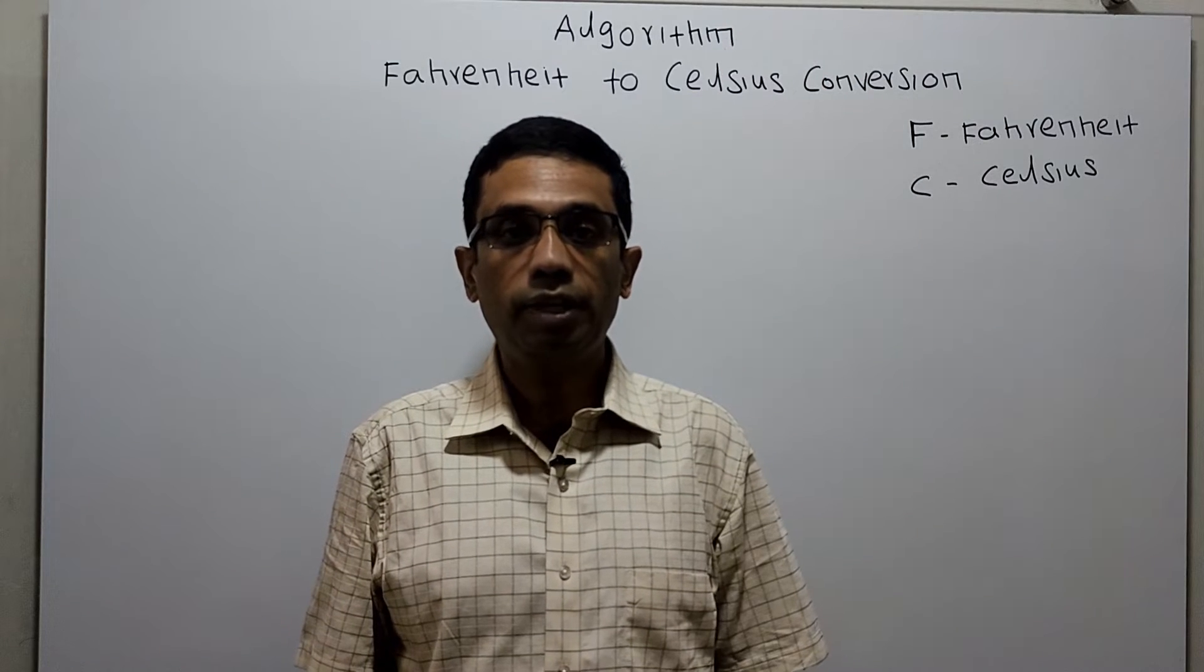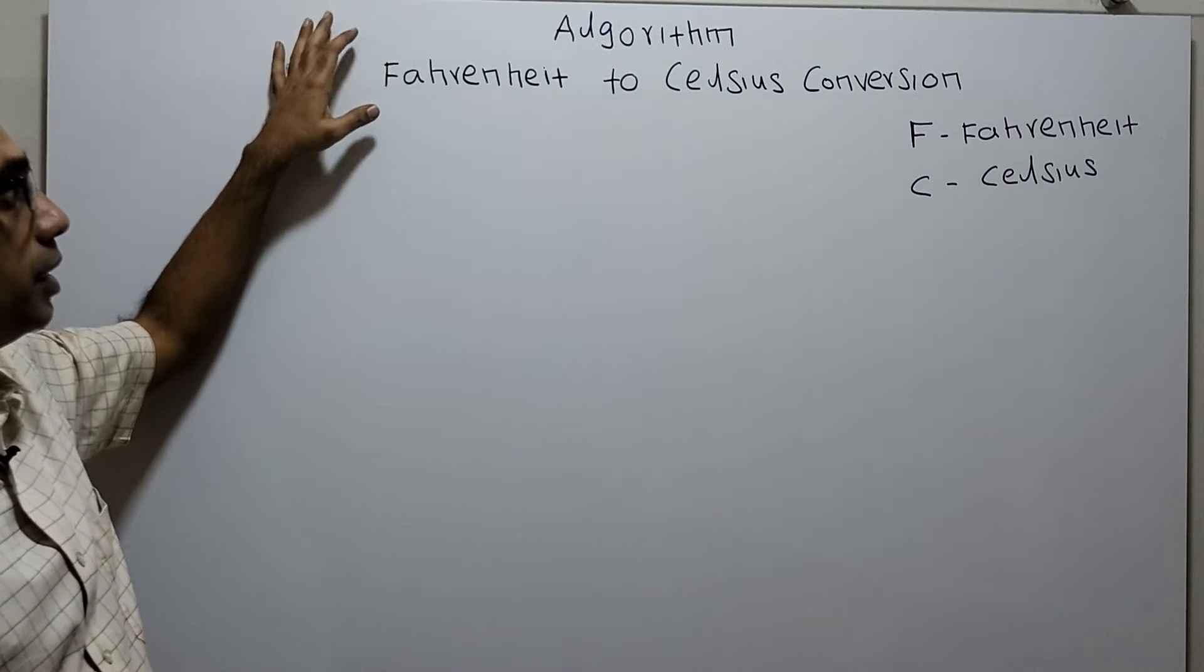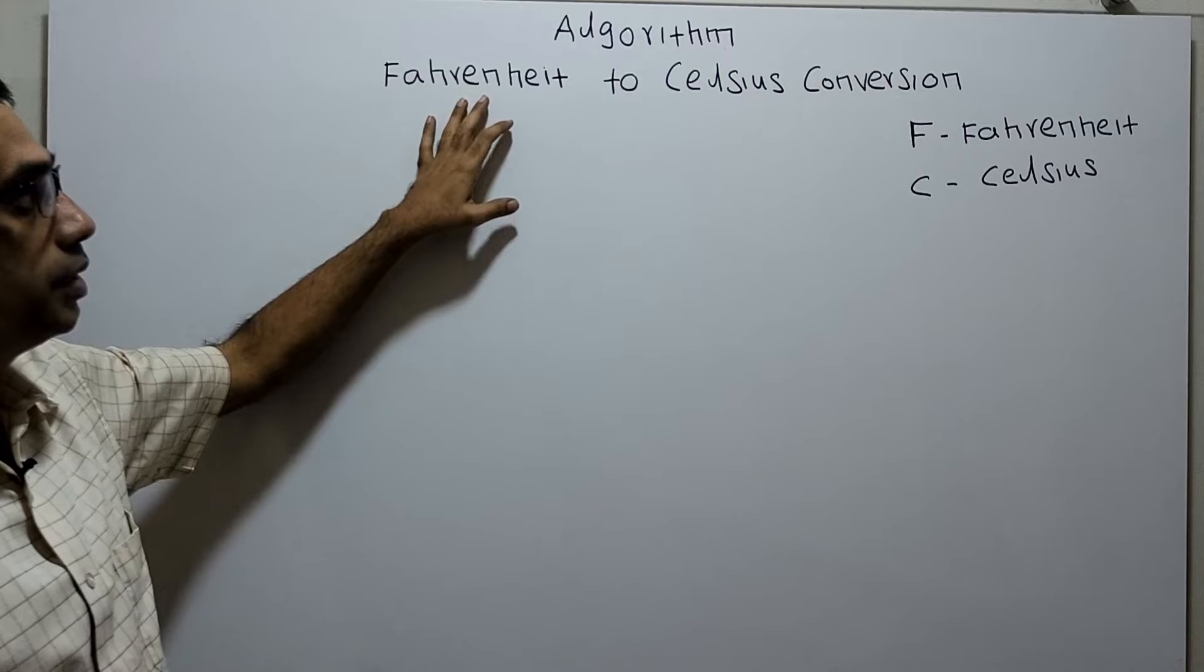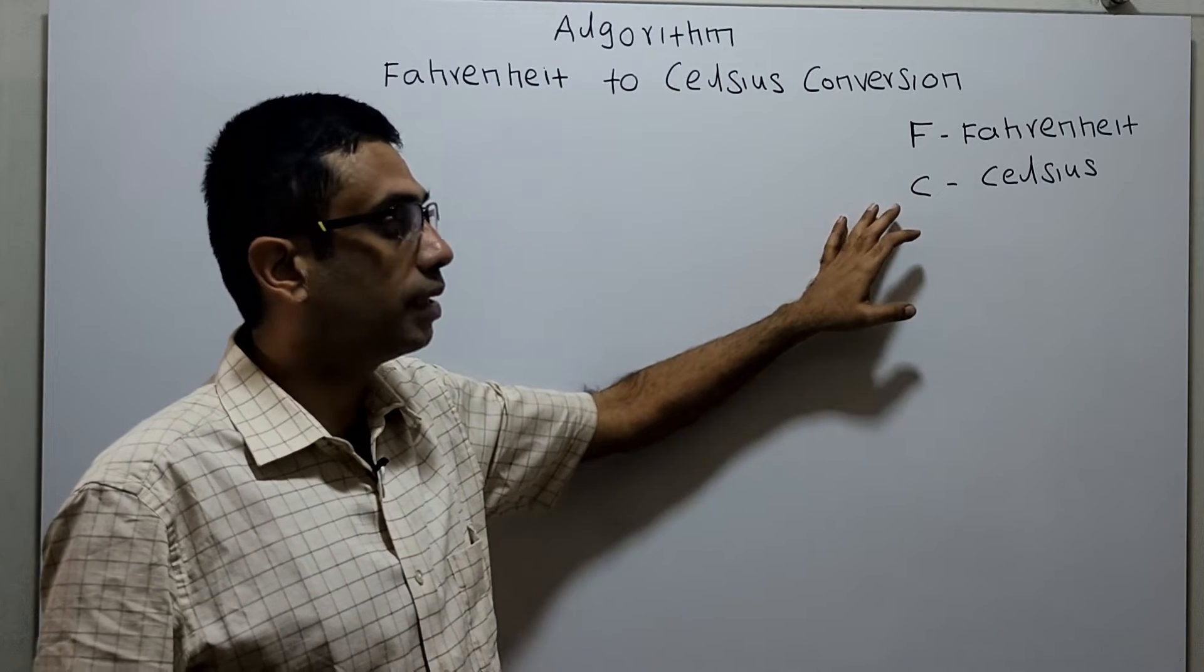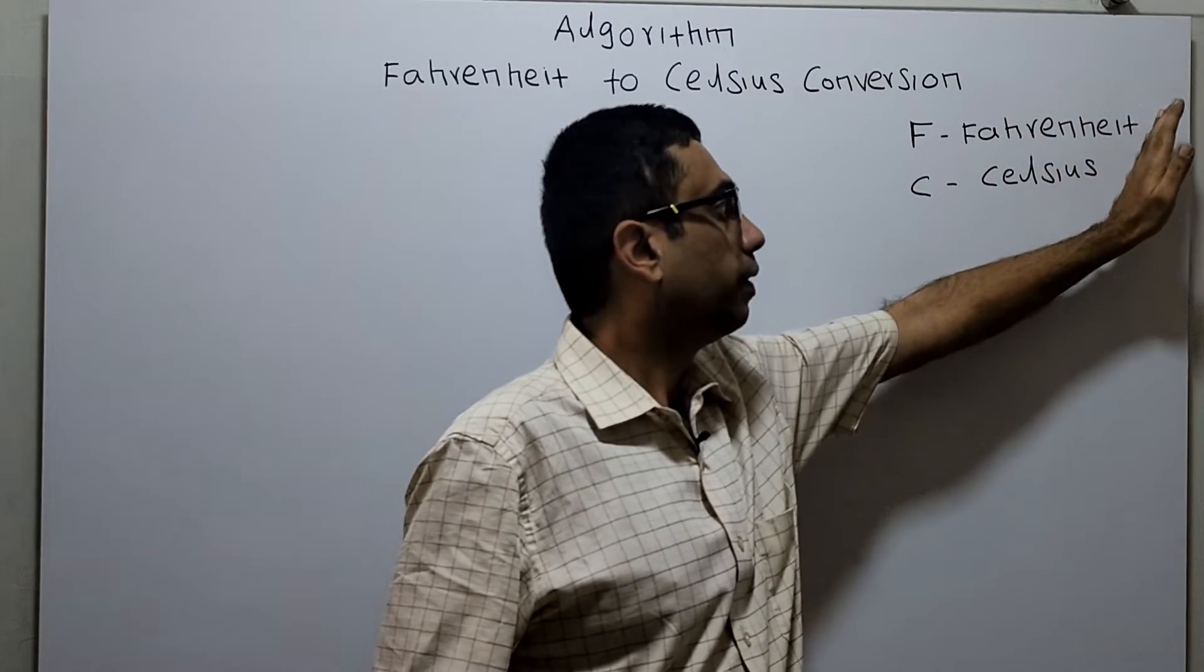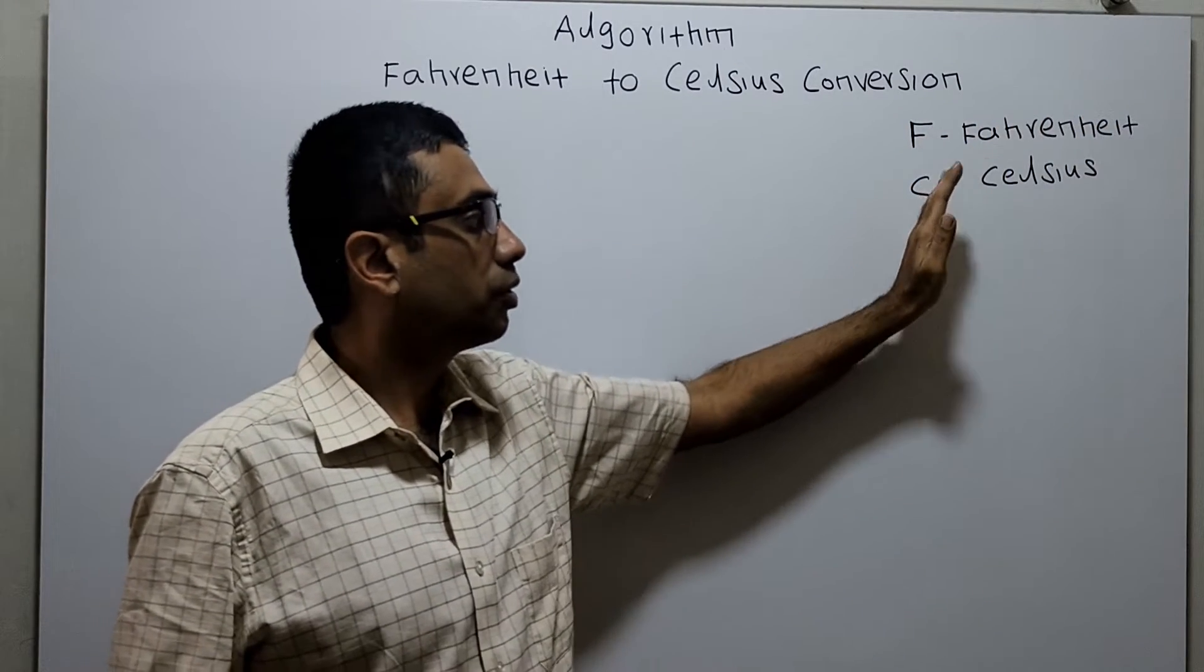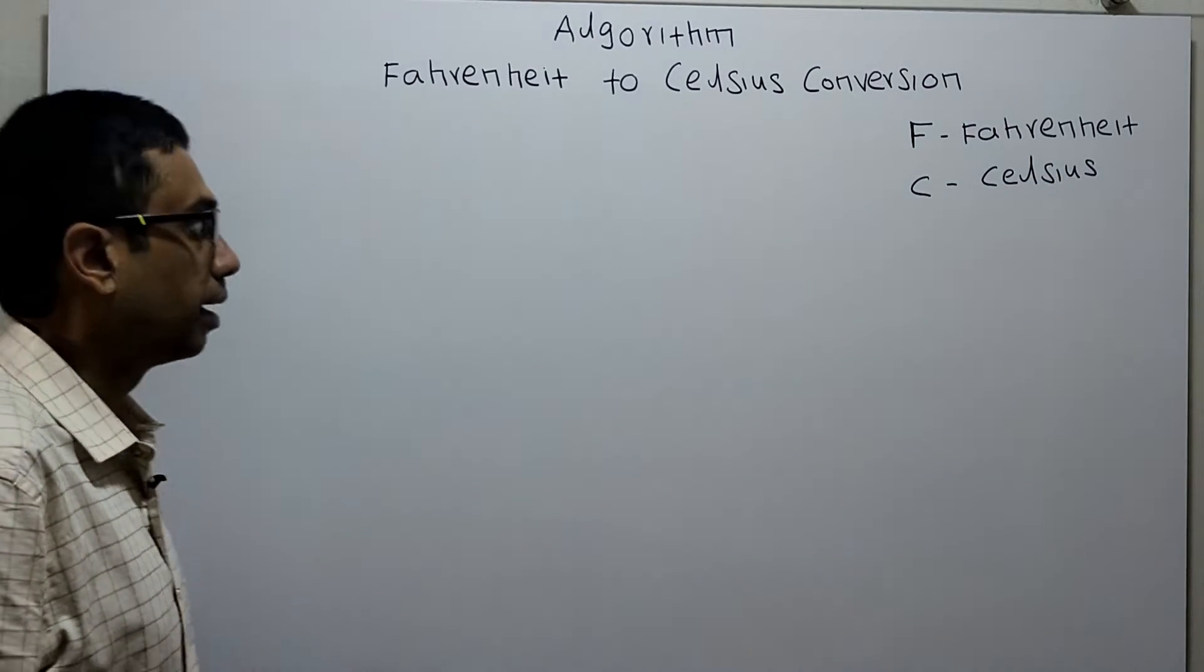Hello friends, we are going to write an algorithm to convert the temperature from Fahrenheit to Celsius. I am using two variables in this algorithm: F is for storing the Fahrenheit value, C is used to store the Celsius value. We will write the algorithm.